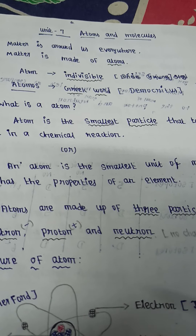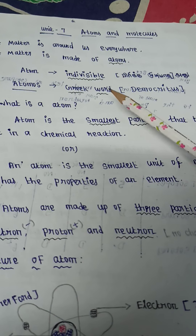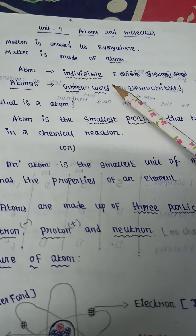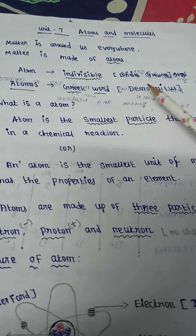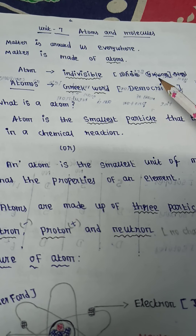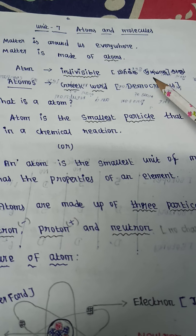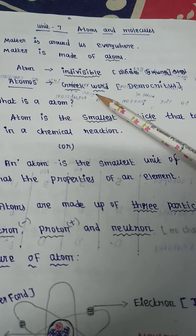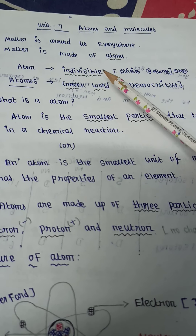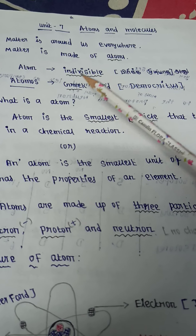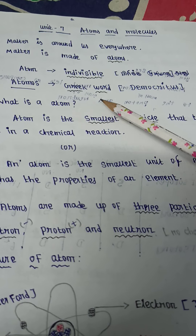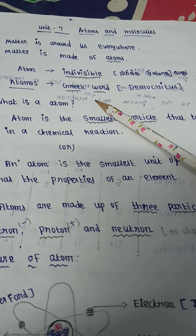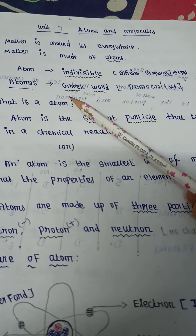So, atom is indivisible. Indivisible means that it cannot be divided. The word atom comes from the Greek word — autonomous. So, atom means indivisible.